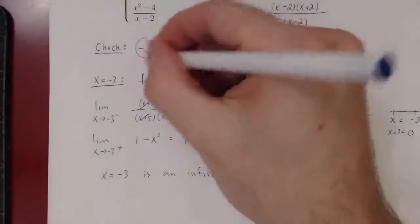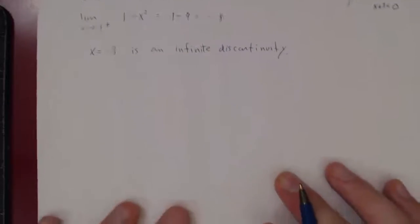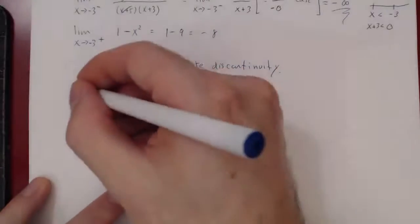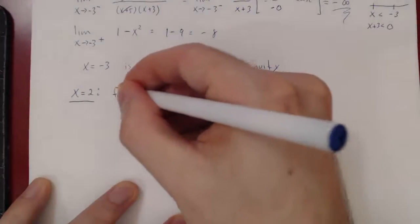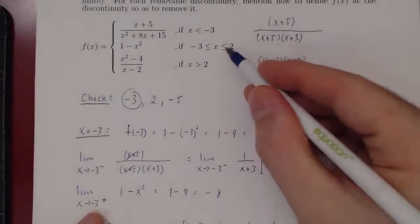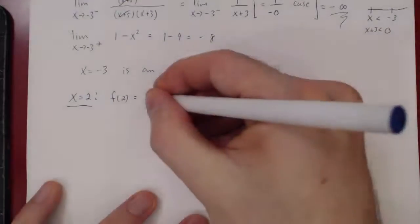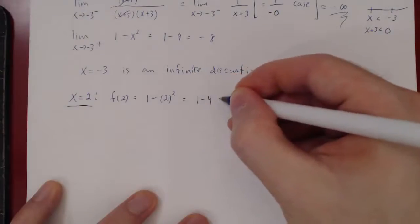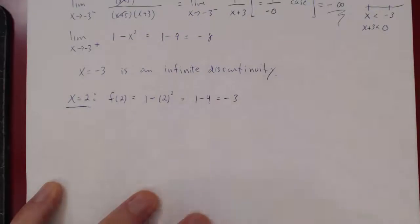One down, two more to go. Let's now check x equals 2. At x equals 2, we look at the value of f at 2. When x is less than or equal to 2, the function is 1 minus x squared, so we get 1 minus 2 squared, which is 1 minus 4, giving us negative 3. The function exists at 2 and the value is simply negative 3.